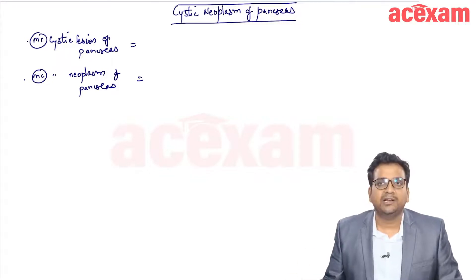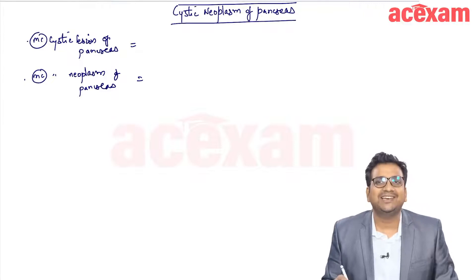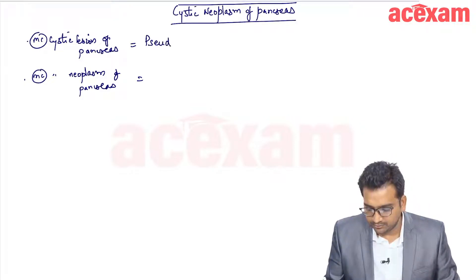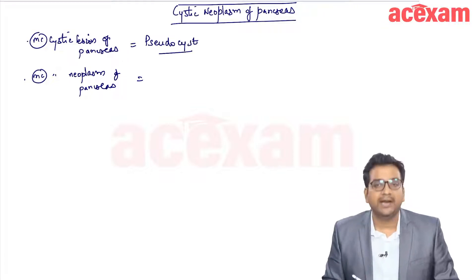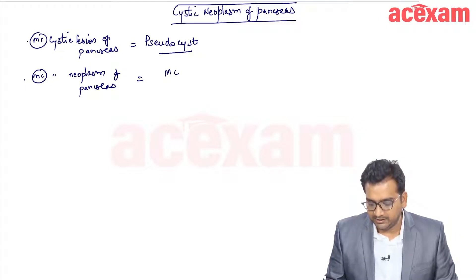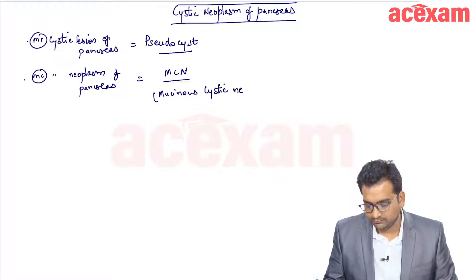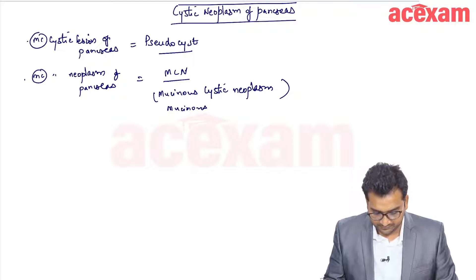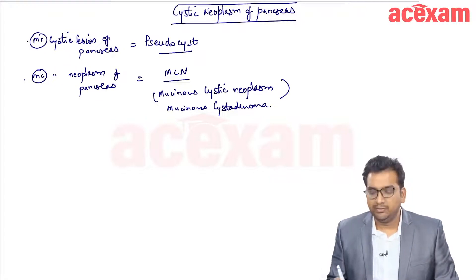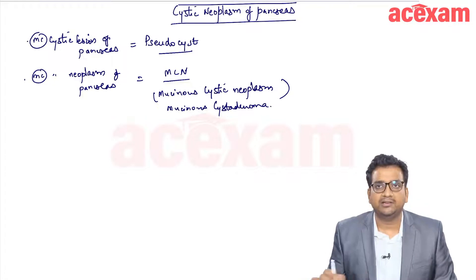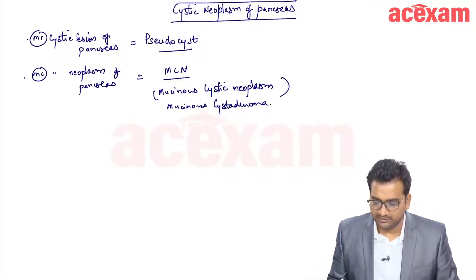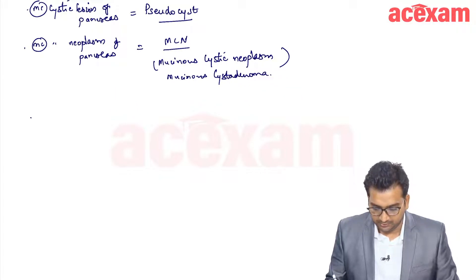The next topic is cystic neoplasm of pancreas. The most common cystic lesion of the pancreas is pseudocyst, and the most common cystic neoplasm of pancreas is MCN, that is mucinous cystic neoplasm or mucinous cyst adenoma. The three important cystic neoplasms are serous cyst adenoma, mucinous cyst adenoma, and IPMN.